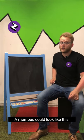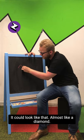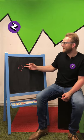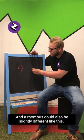A rhombus could look like this. It could look like that, almost like a diamond sort of thing, because they're all the same length.